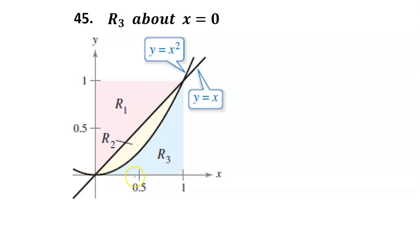Consider a region bounded by functions, like the blue region R3. Now, imagine rotating this region around the y-axis. It would form a solid called a solid of revolution. In this video, I will show you how to calculate the volume of a solid of revolution.